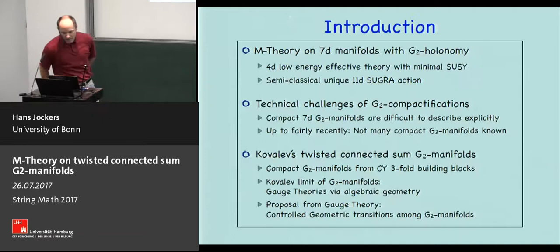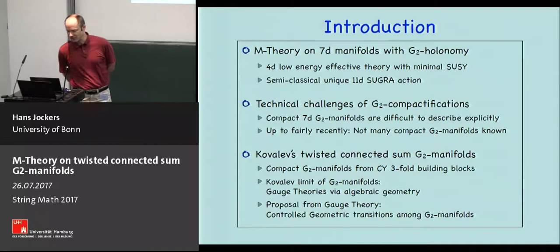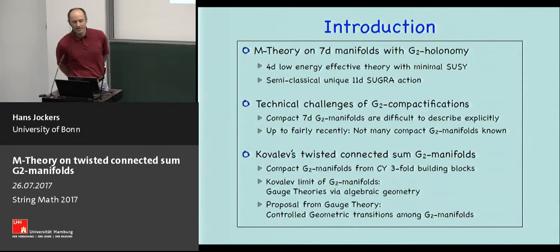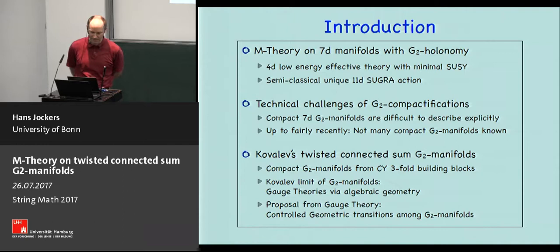The motivation for studying M-theory on G2 manifolds is that from a physics point of view it gives rise to an interesting theory in four dimensions — mainly a four-dimensional low energy effective theory with minimal supersymmetry. The nice thing about M-theory is that you can start semi-classically with a unique 11-dimensional action and dimensionally reduce it to arrive at a semi-classical description of the resulting low energy theory.